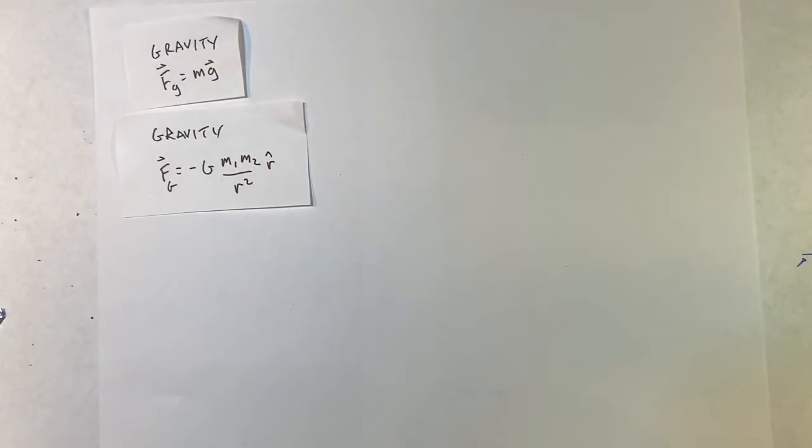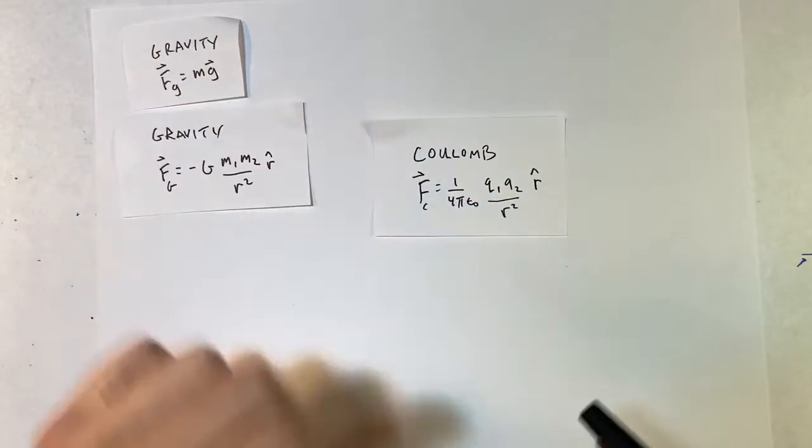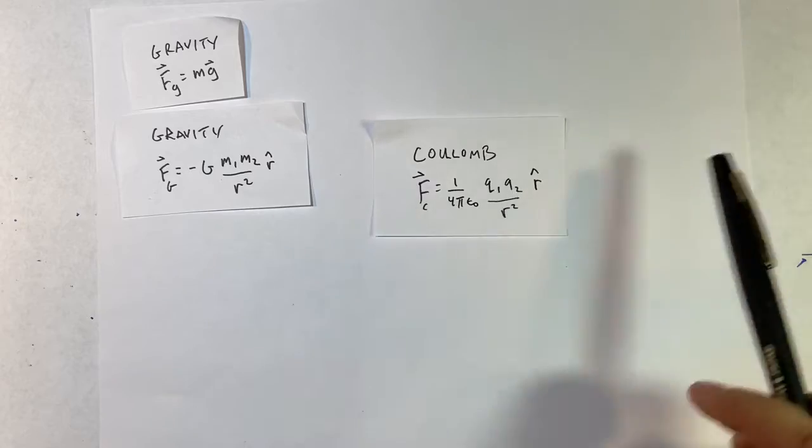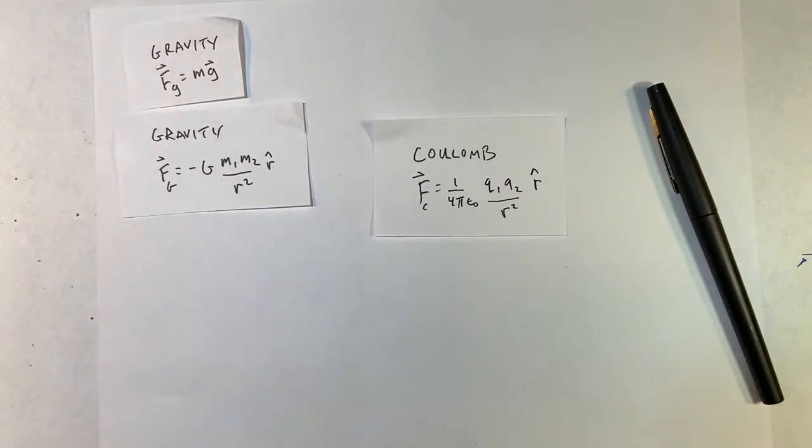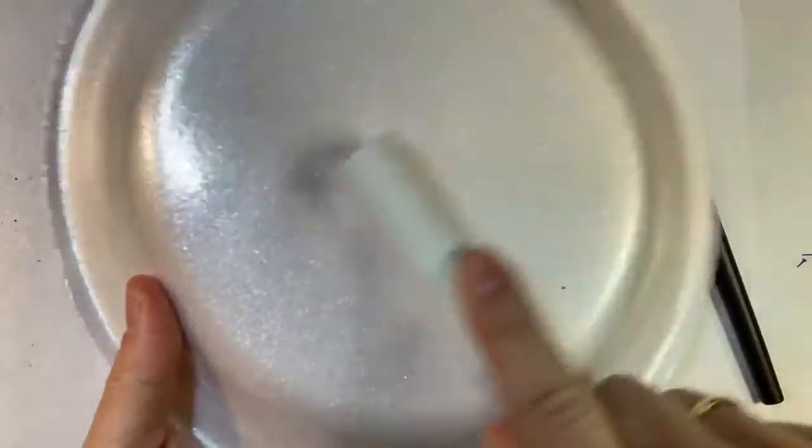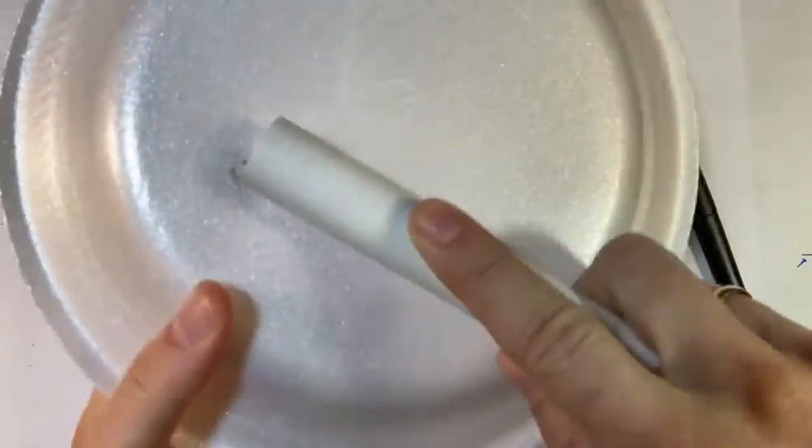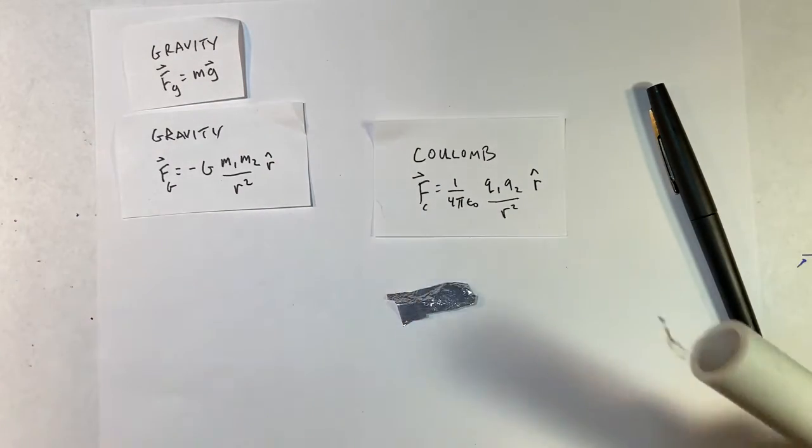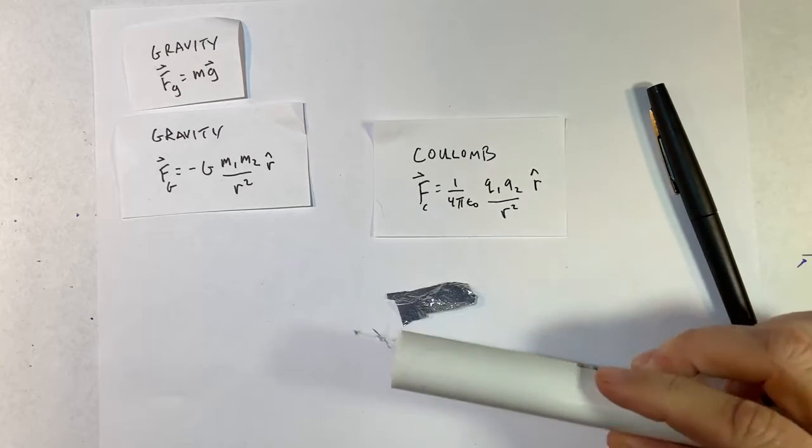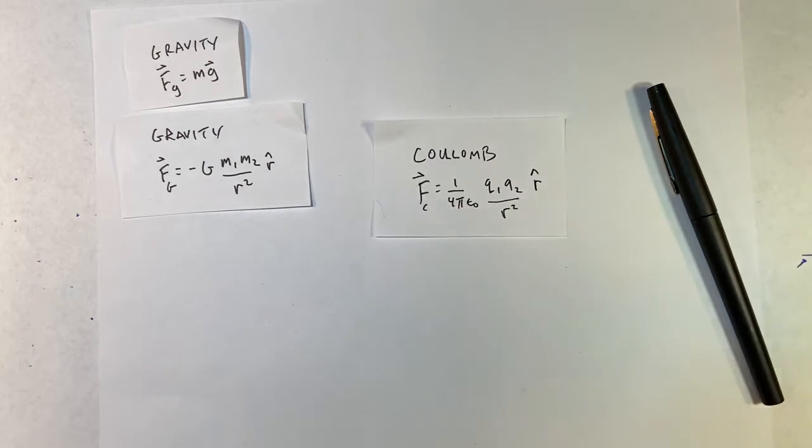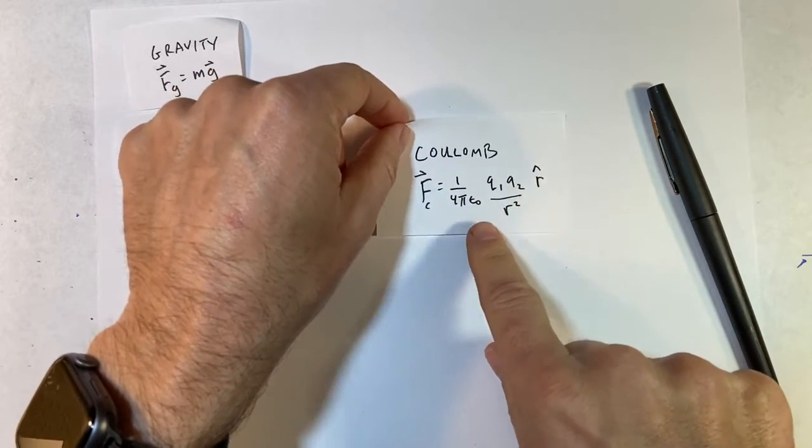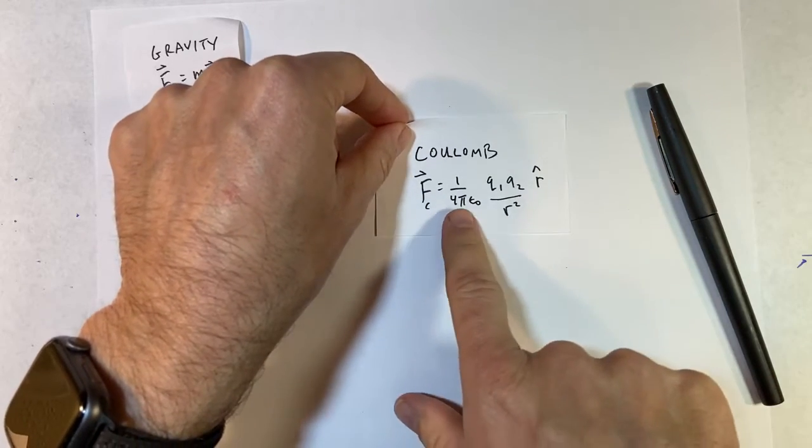Next we have the Coulomb force. It looks very similar to the gravitational force. This is an interaction between objects that have electric charge. I can demonstrate this for you. So here's a styrofoam plate and a PVC pipe, and you rub it. It doesn't always work because it's wet here. And now I bring it near this, and it attracted. Okay, so that's the Coulomb force. We haven't really talked about it a lot; you'll talk about it in the next semester.